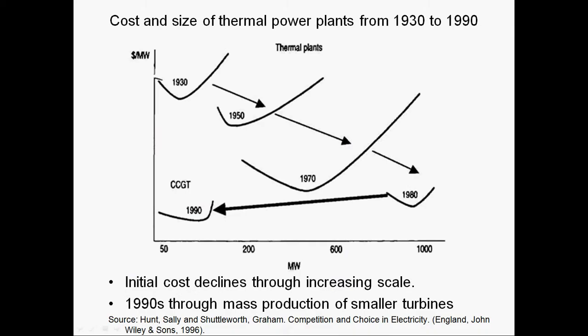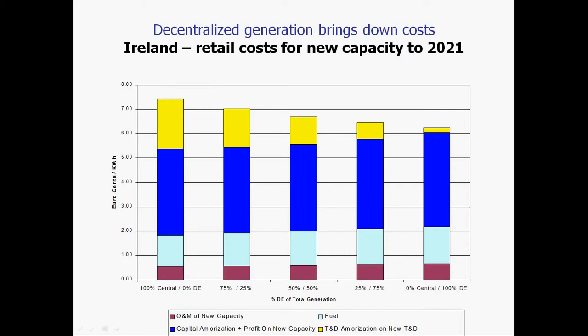One of the things driving decentralization has been changes in the economy of scale. Up through the 1980s, the bigger the power plants you built, the cheaper they were in dollars per megawatt. But that really changed in the 1990s through mass production of smaller turbines, so it was no longer true that bigger was better. Another aspect is that transmission and distribution costs are lower for decentralized options, as shown in a study of total costs to bring on new generating capacity in Ireland.